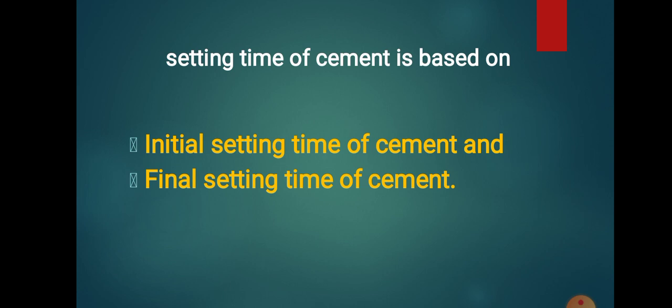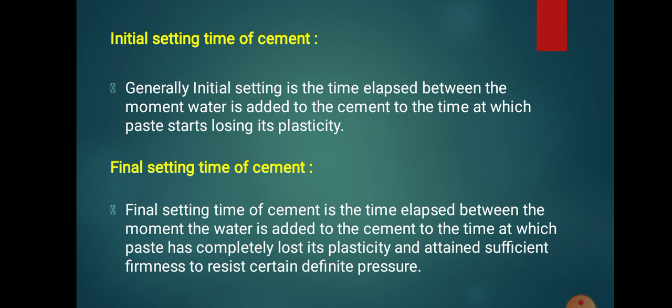Initial setting time of cement is the time elapsed between the moment when water is added to the cement, to the time at which the paste starts losing its plasticity. When we add water to the cement, it starts a chemical reaction, and because of that it will start losing its plasticity. That time is known as the initial setting time of cement. You can also say that it is the time when cement paste starts hardening.